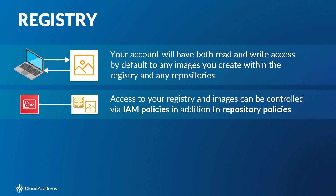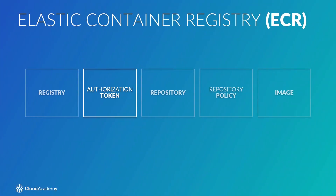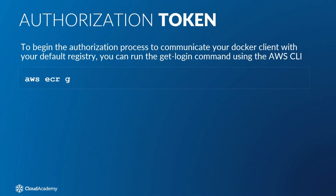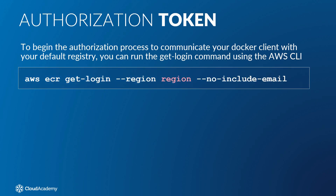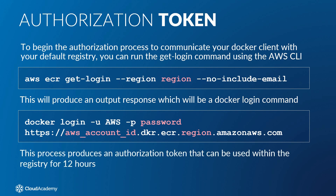As the Docker command line interface doesn't support the different AWS authentication methods, before your Docker client can access your registry it needs to be authenticated as an AWS user — which will then allow your client to both push and pull images — and this is done by using an authorization token. To begin the authorization process, you can run the Get Login command using the AWS CLI, where the red text should be replaced with your own region. This will produce a Docker Login command as output. You must then copy this command and paste it into your Docker terminal, which will authenticate your Docker CLI to your default registry. This process produces an authorization token that can be used within the registry for 12 hours, at which point you will need to re-authenticate by following the same process.